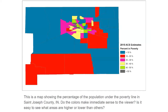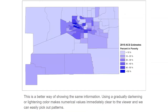This map shows the percentage of the population under the poverty line in St. Joseph County, Indiana. Do the colors make immediate sense to the viewer? Is it easy to see what areas are higher or lower than others? In the second map, we've switched from the categorical color scale, which uses different color hues for each percentage group, to a sequential color scale using a single color hue, which gradually darkens as the percentage increases, so the viewer can easily see the patterns in the data.